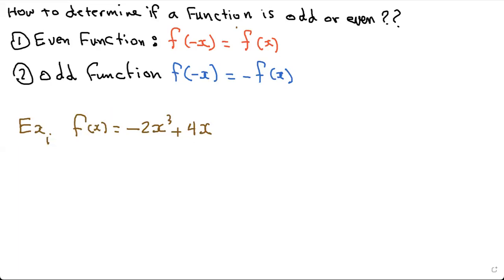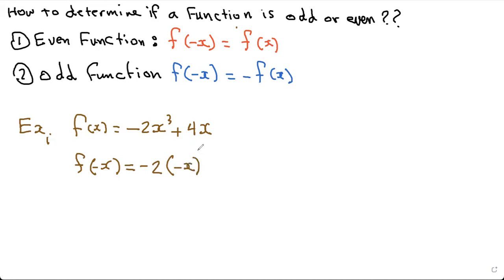When we have a function, all we need to do is find f of negative x first, which is basically function notation. What you do is go to every x in the function and change it to negative x. You still have the cube on top, and instead of x, you just write negative x.